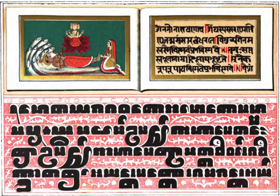Pali, or Magadhan, is a Middle Indo-Aryan language native to the Indian subcontinent. It is widely studied because it is the language of the Pali Canon or Tipitaka, and is the sacred language of some religious texts of Hinduism and all texts of Theravada Buddhism. The earliest archaeological evidence of the existence of canonical Pali comes from Pyu city-states inscriptions found in Burma, dated to the mid-5th to mid-6th century CE.